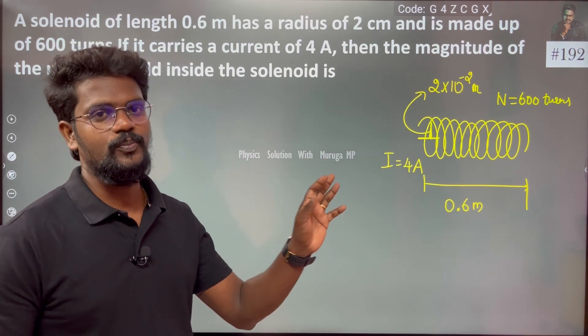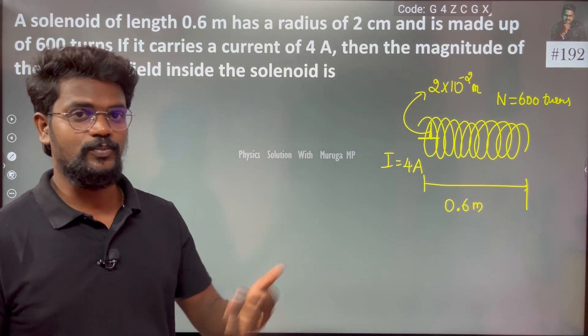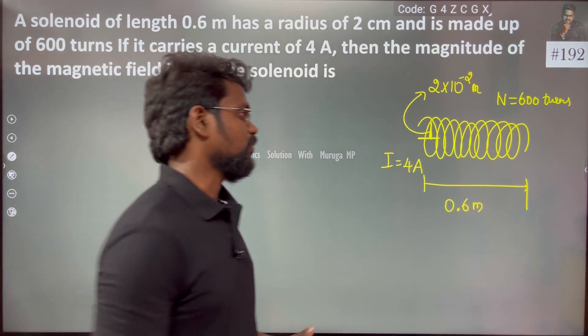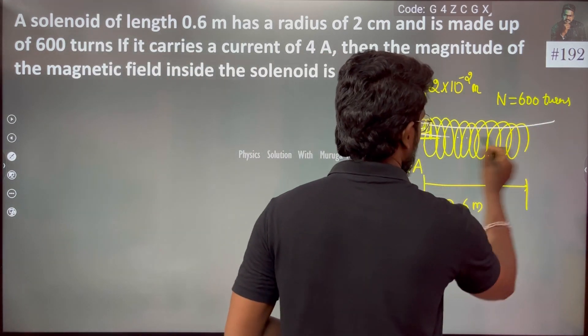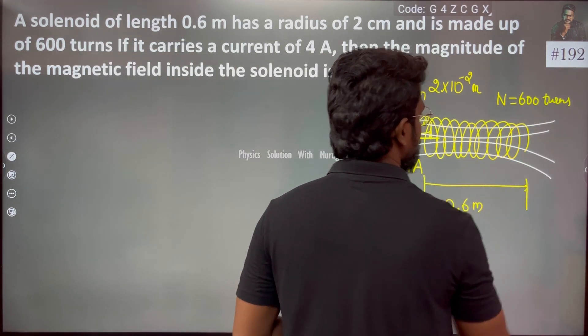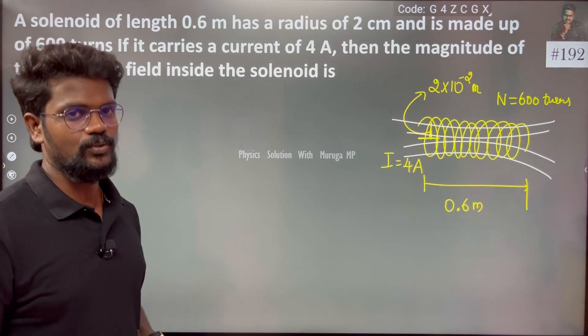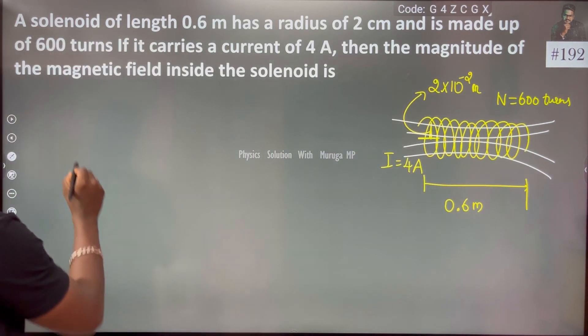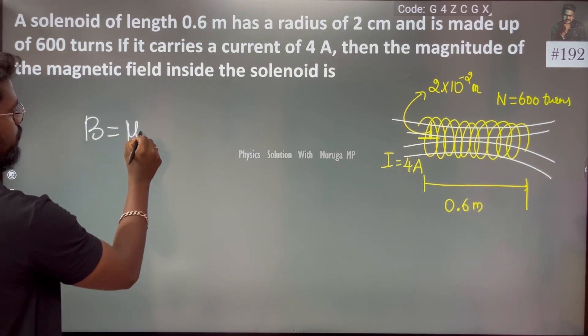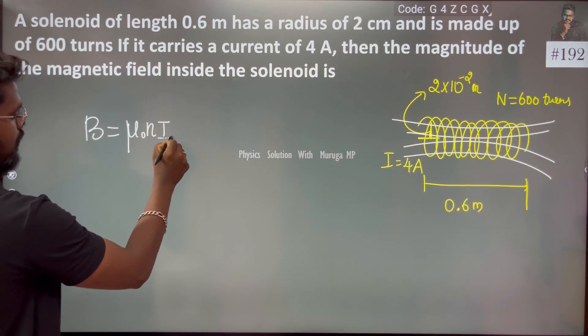We are going to talk about the solenoid magnetic field. Inside the solenoid, the magnetic field is uniform. The solenoid magnetic field B is equal to μ₀ times nI.